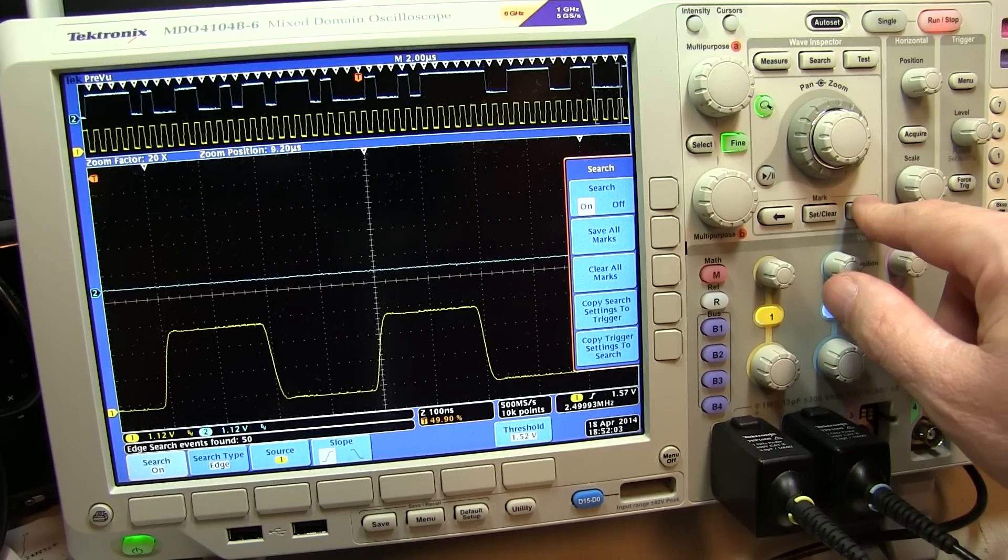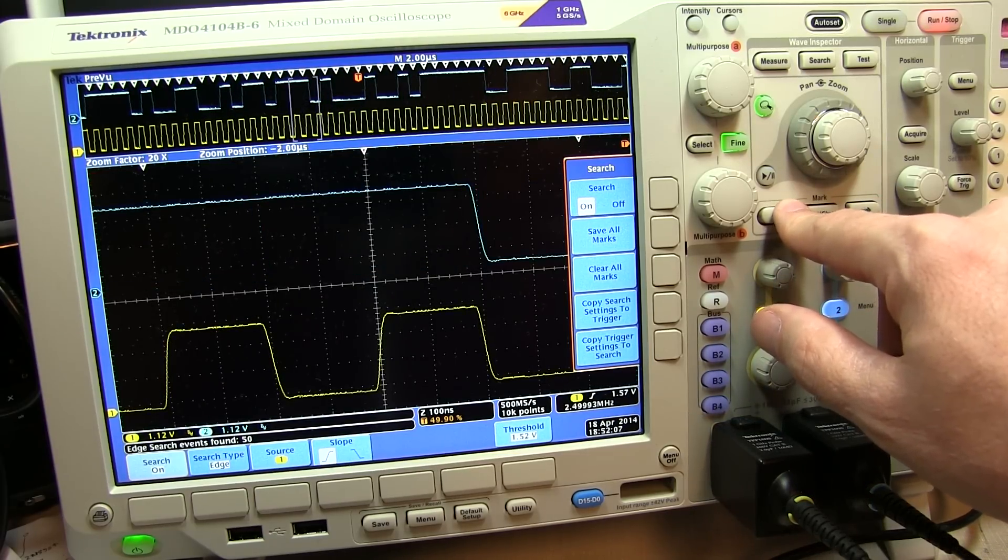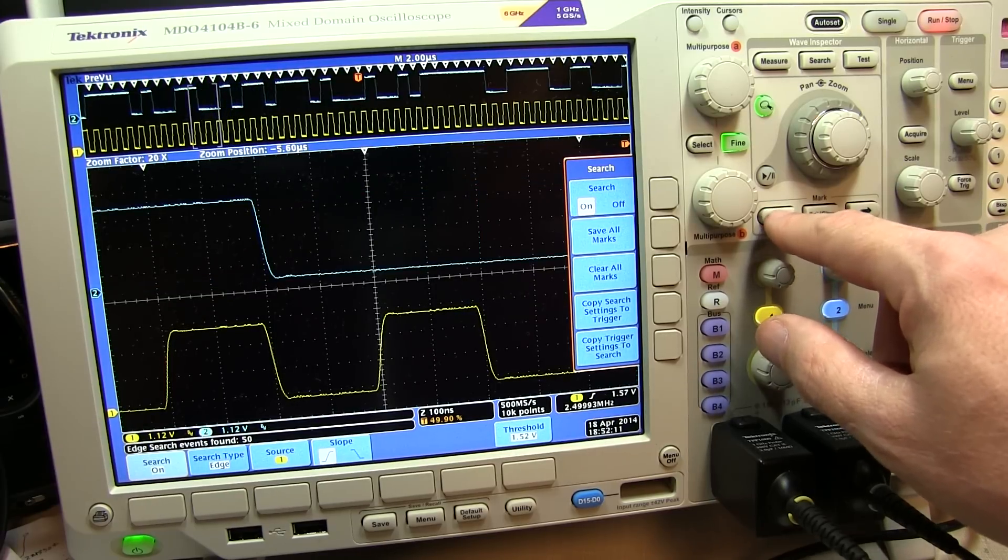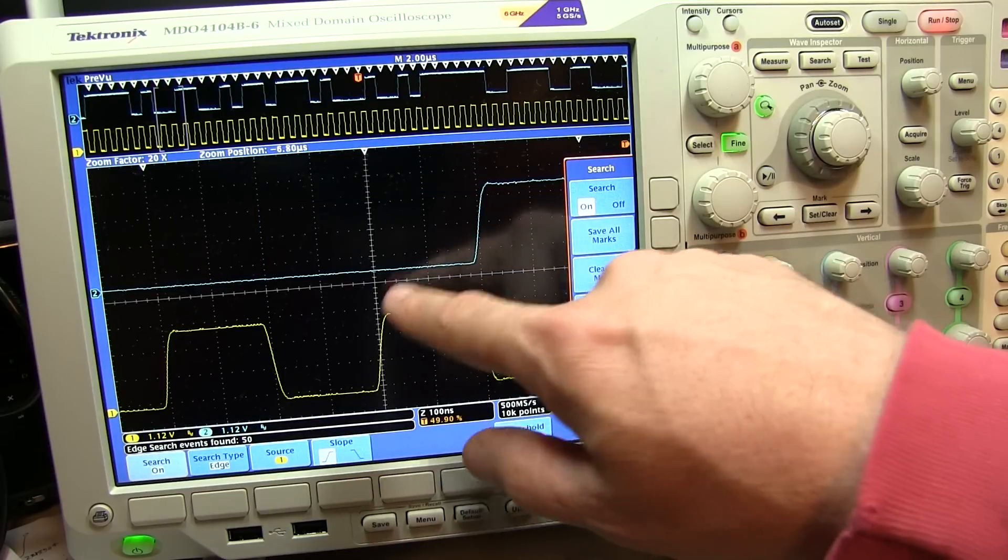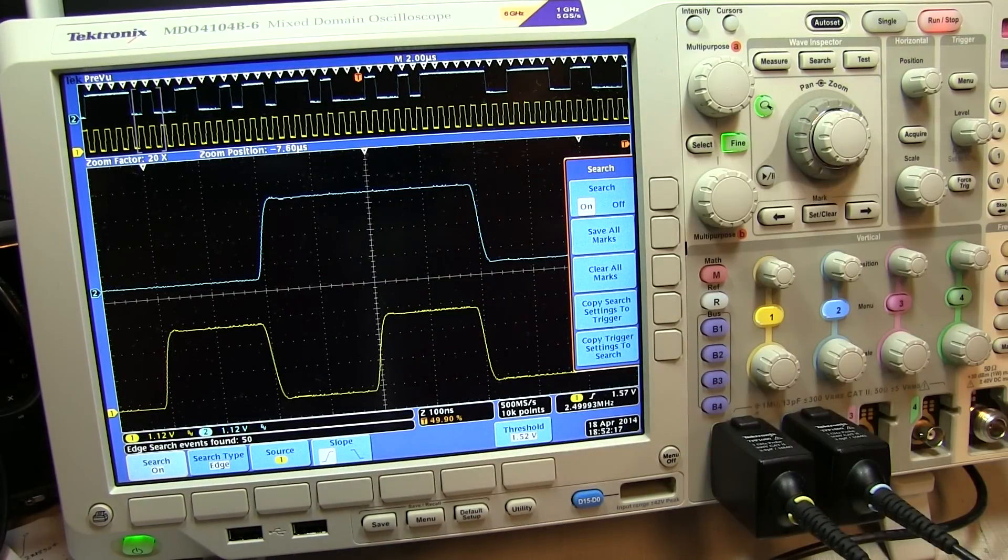So this shows you the relationship of the clock and a serial bitstream so that if you're going to clock this serial data into a device, you'd use the rising edge of that clock to sample the data into a latch or a flip-flop or something like that on the rising edge because you're right in the middle of the bit.